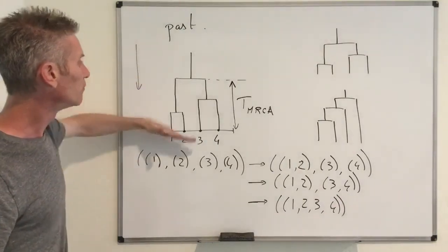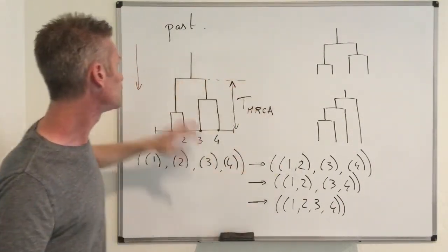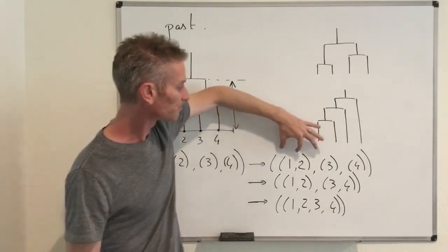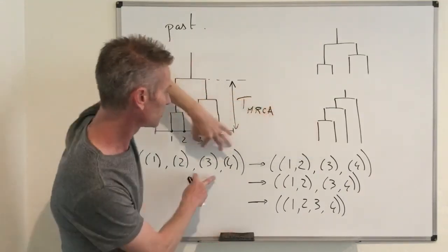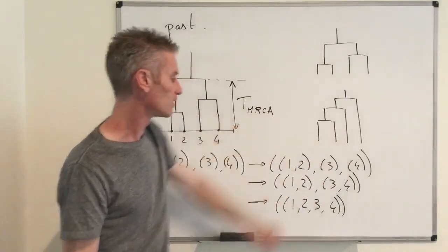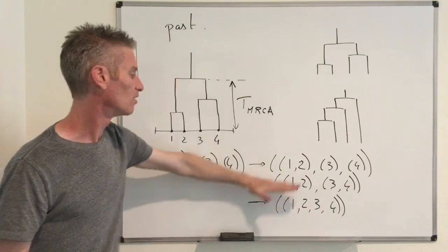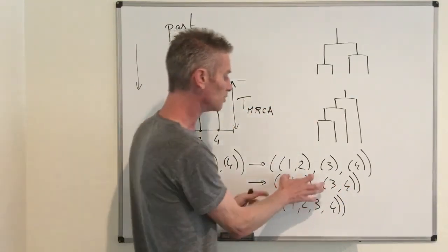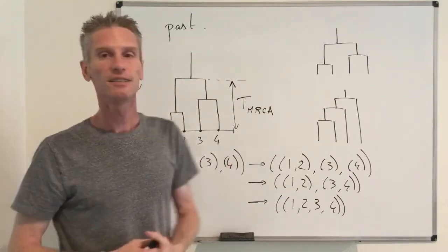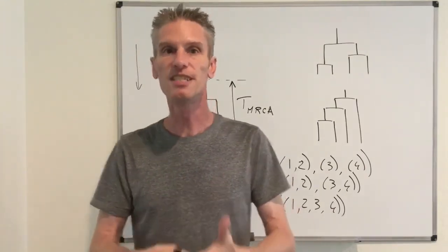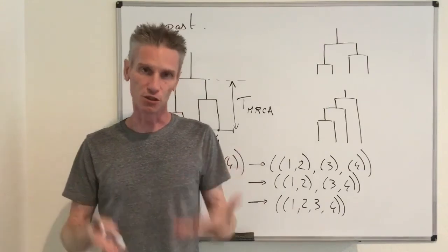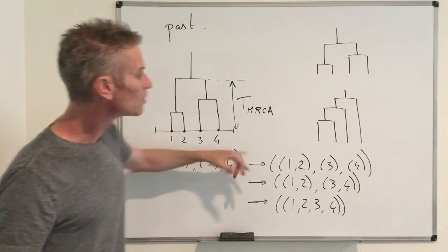For a different tree topology — say 1 and 2 coalesce first, then {1,2} merges with 3 before merging with 4 — the sequence of partitions would instead be {1},{2},{3},{4} → {1,2},{3},{4} → {1,2,3},{4} → {1,2,3,4}. This shows how using partitions of the set of n individuals as a state space captures the topology of the tree.